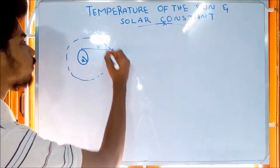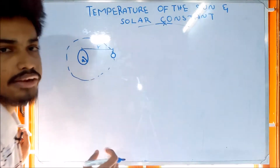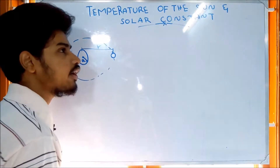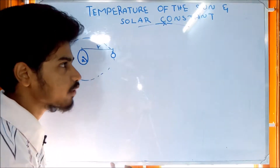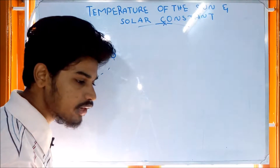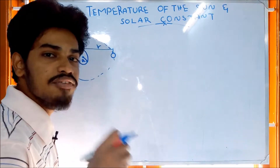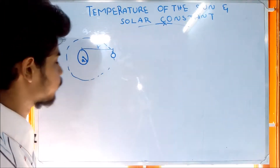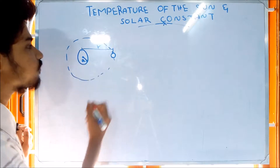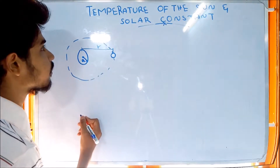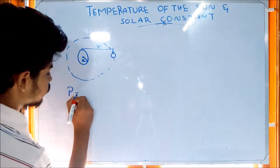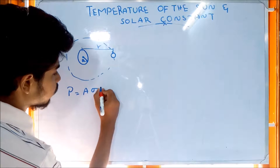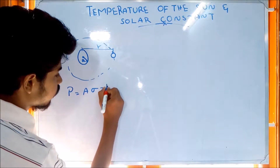The sun radiates energy to the earth. If we have a radiation meter, we will be able to apply the Stefan-Boltzmann law. P is equal to A sigma T to the power of 4.